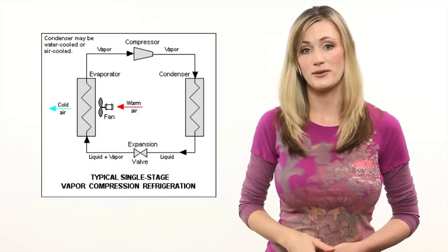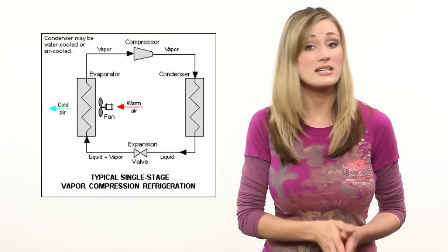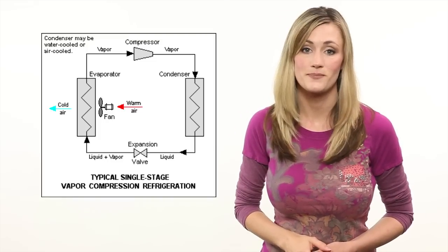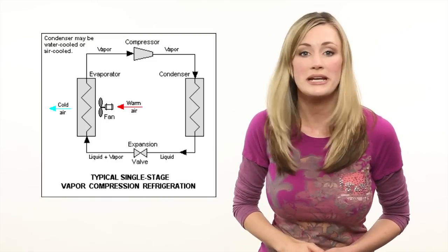Most air conditioning systems work by a process engineers call a vapor compression refrigeration cycle. A fluid with unique thermodynamic properties called a refrigerant is forced through a powered compressor as a gas. The refrigerant exits the compressor as a high-pressure superheated gas.